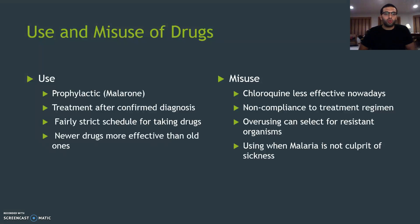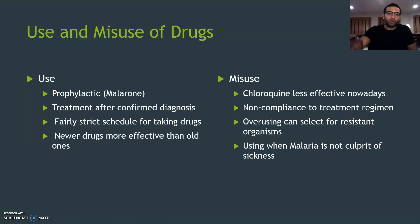Now, the use and misuse of these drugs. You can use them as a prophylactic measure — for example, you can use malarone to prevent the infection from occurring altogether. You can also treat infection after a confirmed diagnosis. There's a fairly strict schedule with taking these drugs, and the newer ones are more effective than the old ones. For misuse: some of the older ones, like chloroquine, are less effective nowadays. Not sticking to your treatment schedule — noncompliance — can lead to resistance. And overusing these drugs or using them when malaria is not the culprit of illness can be really complicating as well.